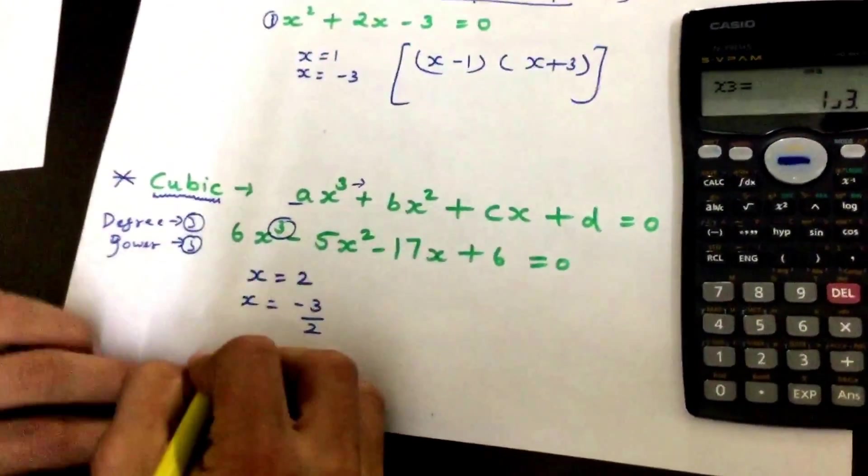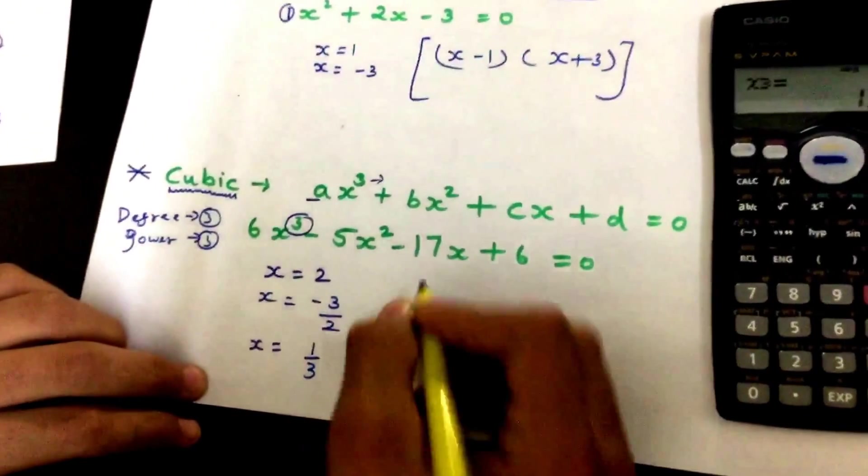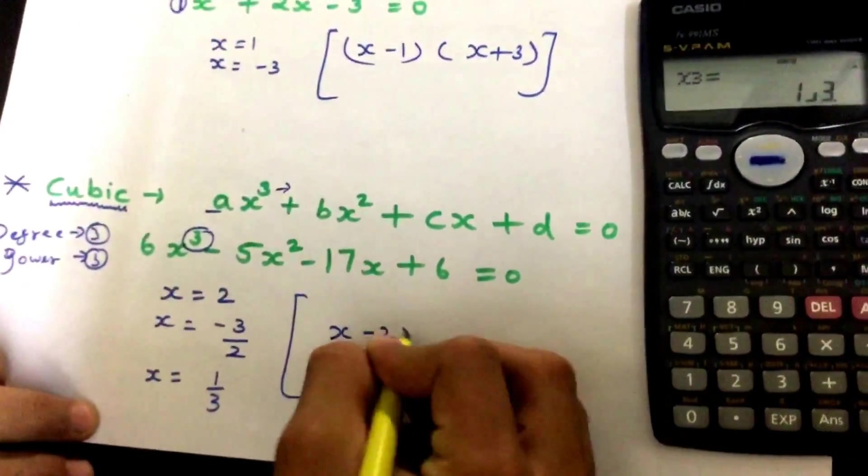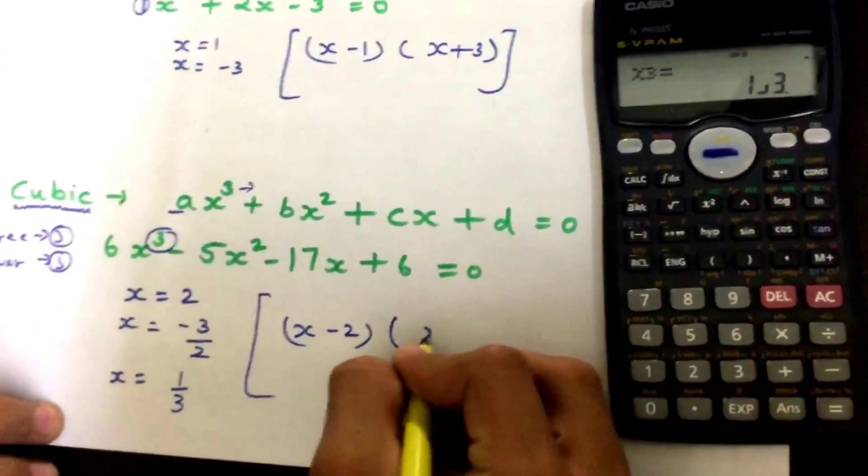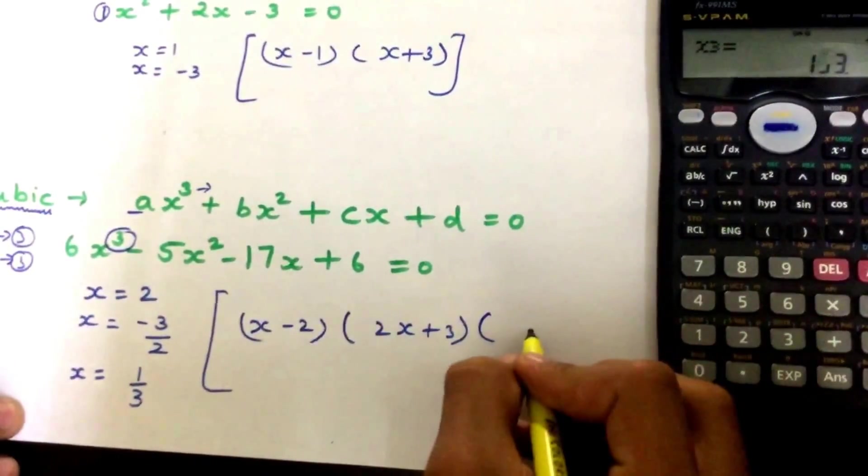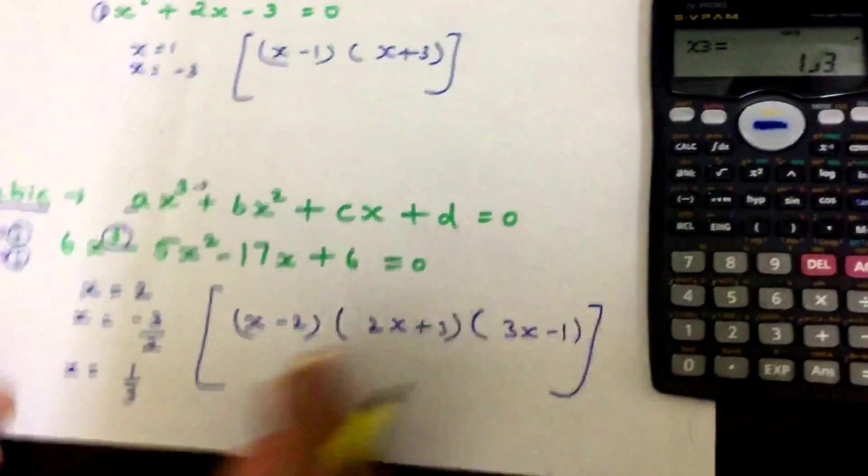I have to go further and solve this: x equals 1/3. Now I can factorize it and write it like (x - 2), (2x + 3), and the third one which is (3x - 1). That's how I can solve the...